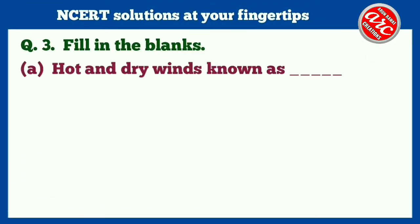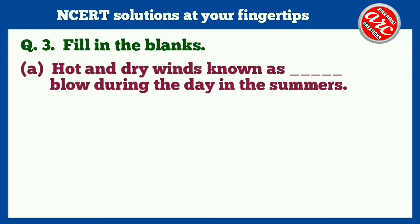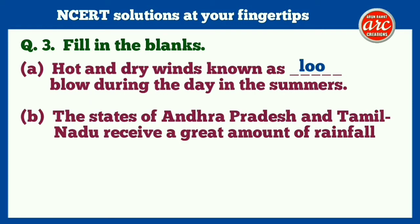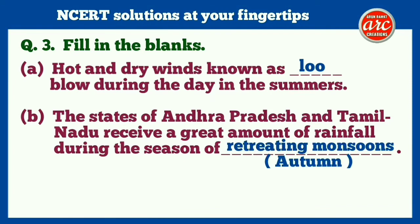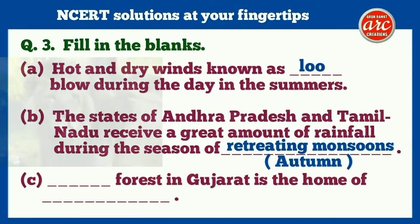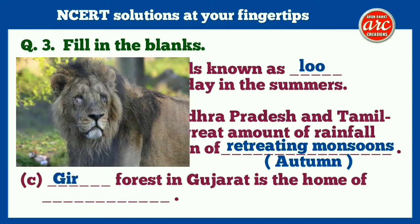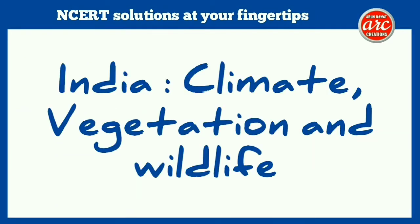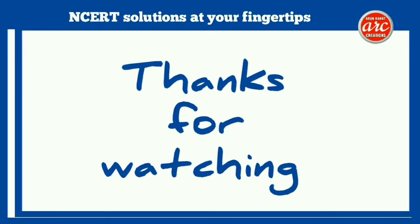Question number three — fill in the blanks. (a) Hot and dry winds known as ___ blow during the day in summers. Answer: Loo. (b) The states of Andhra Pradesh and Tamil Nadu receive a great amount of rainfall during the season of retreating monsoon — Autumn. (c) ___ forest in Gujarat is the home of ___. Answer: Gir forest in Gujarat is the home of Asiatic lions. These were the question answers of the chapter. Thanks for watching the video till the end.